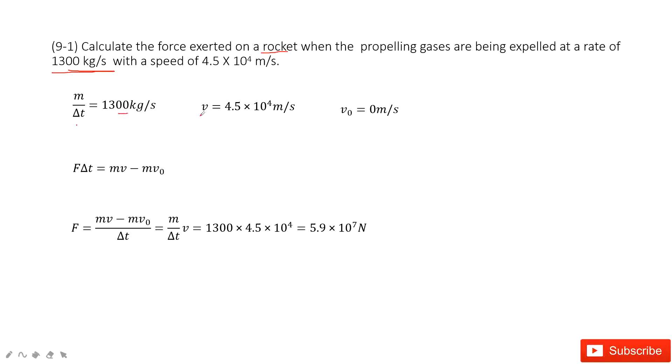The final velocity of the expelled gas is 4.5 × 10⁴ meters per second. Initially, this gas has a velocity of zero because it's inside the rocket. Then the rocket expels it out. This is the final velocity, and this is the initial velocity for this part of the gas.